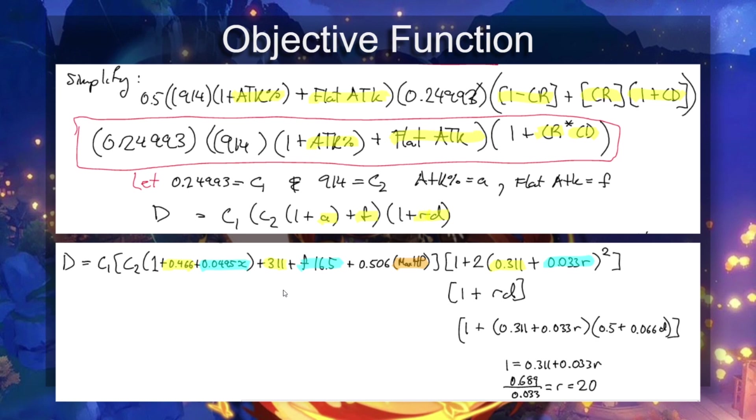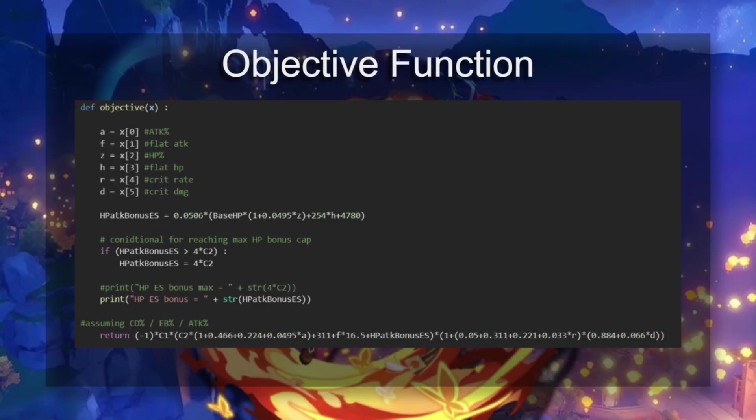In yellow, we've got our main stat values, and we're going to get a little bit more into that in the different cases that we consider. We're going to consider two main cases: one is Hu Tao with an attack percent ruin, and then one is with Hu Tao with a HP percent ruin. The other two would be crit rate and elemental bonus.